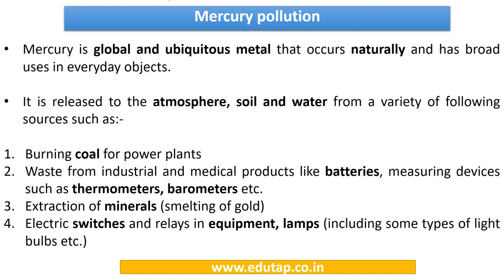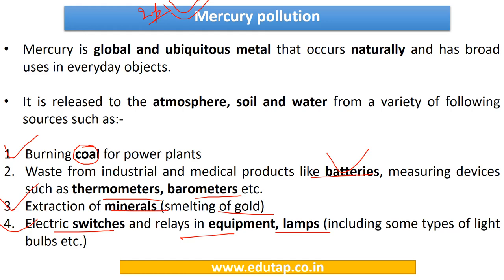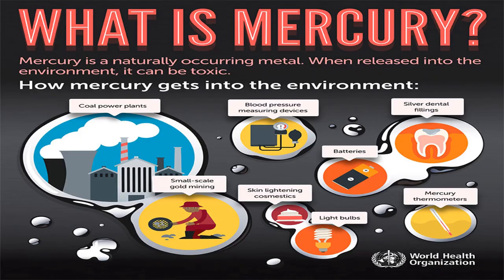It is very important to understand the sources from where mercury is released into the atmosphere, soil, and water. The main sources are: burning of coal for power plants, use in measuring devices like thermometers and barometers, waste from batteries, extraction of metals — mainly gold as explained — and from electric switches, relays, lamps, etc. The following picture shows all the sources from where mercury gets into the environment; go through each source carefully as it is very important from an exam point of view.